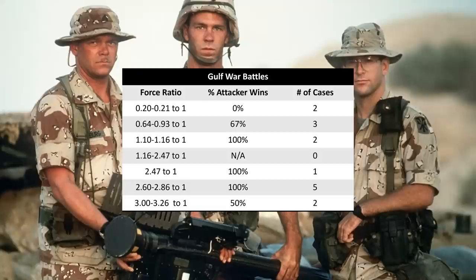Moving to a more recent conflict, we've got data from the Gulf War in 1991. Across 15 cases, there's a sweet spot between 1.1-to-1 and 2.86-to-1 where the attacker won 100% of battles. But moving up to 3-to-1, the success rate actually drops back down to 50%. So not a great sign for our standardized ratio here — 3-to-1 didn't really hold up.